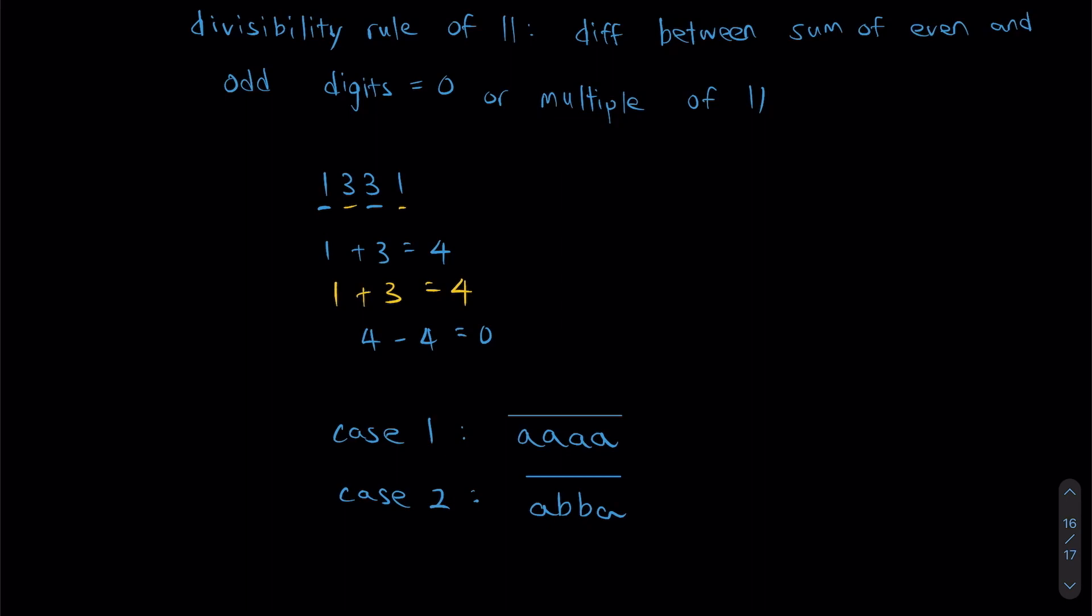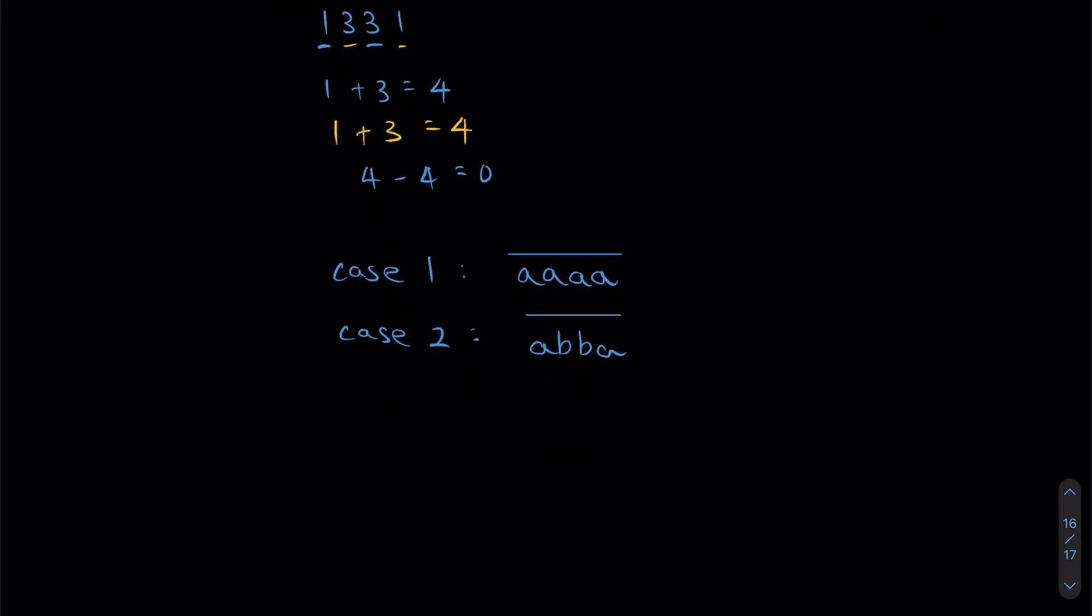So if we add the total possible outcomes for the two cases together, we should get our answer. So let's look at case 1 first. Case 1 is pretty straightforward. A can be any number between 1 to 9. Which means case 1 has 9 possibilities.